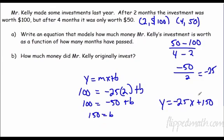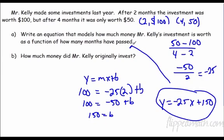So that's our equation. And I said, how much money did Mr. Kelly originally have? Well, originally that would be his starting value. His y intercept, which would be 150 bucks. Best of luck on that chapter 5 test. I'm sure you guys will do just great.